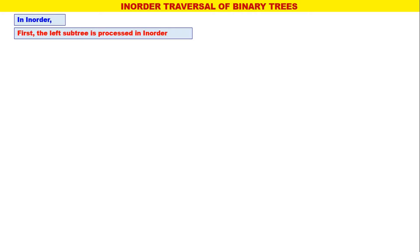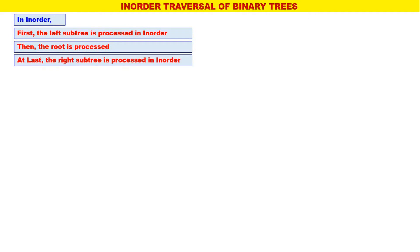In this video we will understand inorder traversal of binary trees. In inorder, first the left subtree is processed in inorder, then the root is processed, then at last the right subtree is processed in inorder. It is called inorder because the root is processed in between the left subtree and the right subtree.